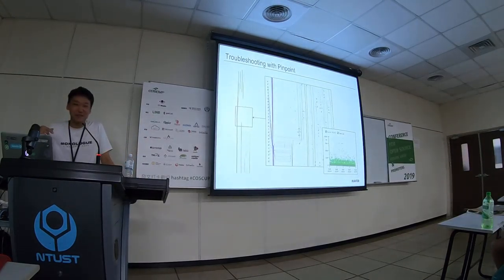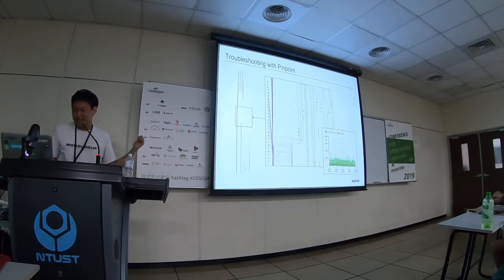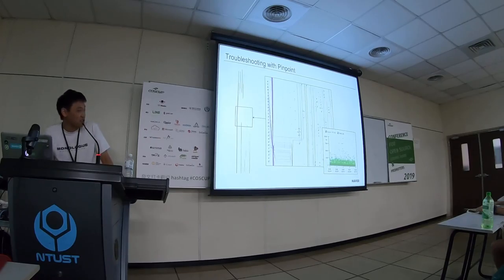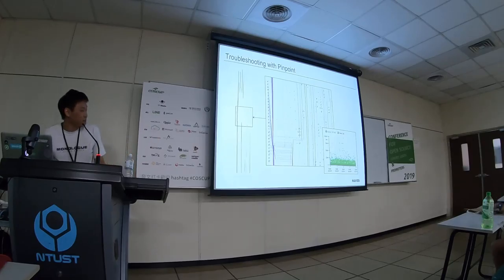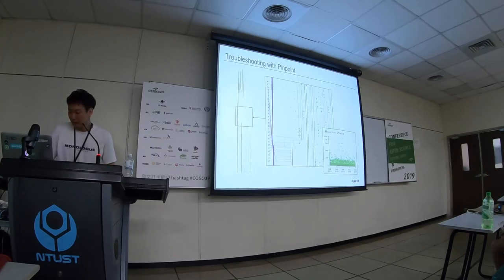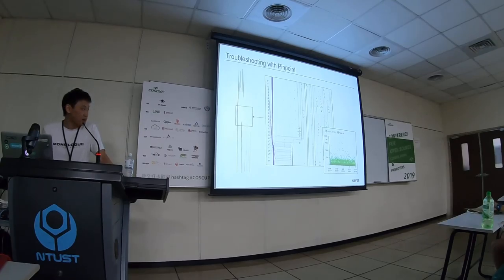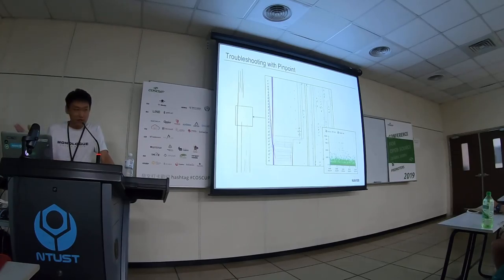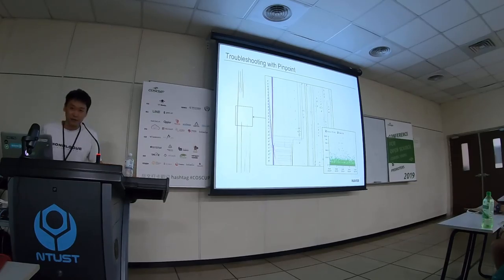This is exactly how we use Pinpoint to monitor our applications in Naver. It would have been impossible to run our system without a system capable of distributed monitoring. Observability is no longer optional if you're running a distributed system. You need a monitoring system that can handle distributed tracing. There are a lot of great solutions out there, and if you want to try Pinpoint, visit our GitHub. I hope this talk has given you some insight on how distributed tracing works.